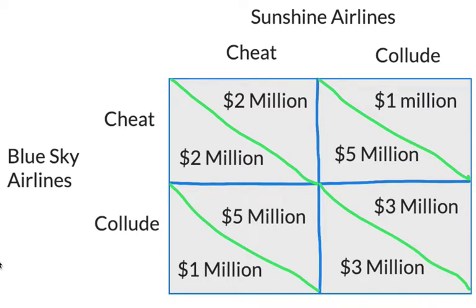Now let's assume that one of the airlines, Sunshine Airlines, decides that it is going to cheat on the agreement, because it is considering trying to make a little extra money. If Blue Sky Airlines continues to collude and Sunshine Airlines cheats and lowers its prices, then Sunshine Airlines would make $5 million and Blue Sky would earn only $1 million.